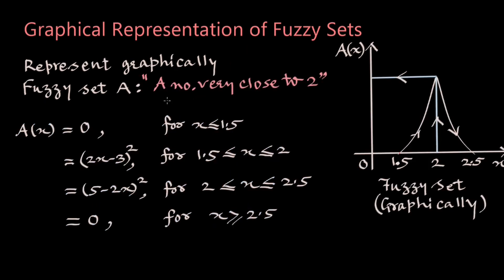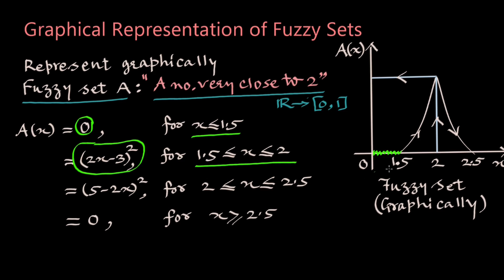We will represent a fuzzy set 'a number very close to 2' which is a fuzzy set A for which grade of membership is a real number from 0 to 1. For x less than or equal to 1.5, grade is 0 which is outside the fuzzy set here. When x is between 1.5 and 2, membership grade is defined by a quadratic function (2x minus 3) whole square which is this parabola, where when x is 1.5 the grade value is 0 here and when x is 2 the grade value is 1 here.